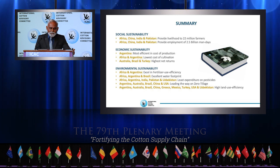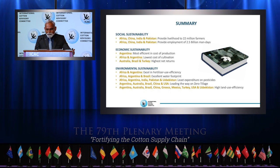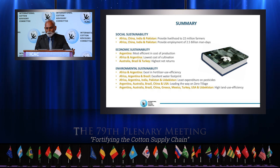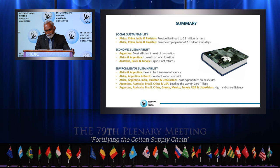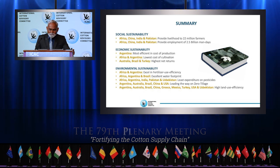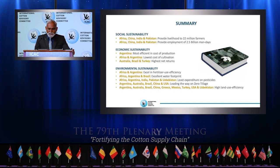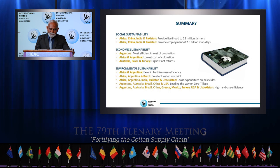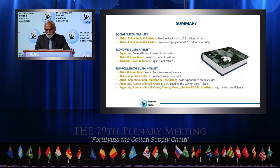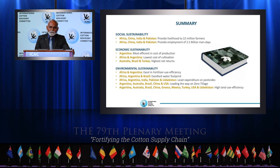To summarize, we dealt with the three main pillars of sustainability. On social sustainability, Africa, China, India, and Pakistan provide livelihood to 22 million farmers, and these countries also provide employment of 2.5 billion man-days. On economic sustainability, Argentina is most efficient in cost of production. Africa and Argentina have the lowest cost of cultivation. Australia, Brazil, and Turkey have the highest net returns. On environmental sustainability, across five different aspects: Africa and Argentina excel in fertilizer use efficiency; Africa, Argentina, and Brazil excel in their water footprint; Africa, Argentina, India, Pakistan, and Uzbekistan spend least on pesticides; Argentina, Australia, Brazil, China, and USA are leading the way on zero tillage and conservation tillage practices; and Argentina, Australia, Brazil, China, Greece, Mexico, Turkey, United States, and Uzbekistan have the highest land use efficiency.